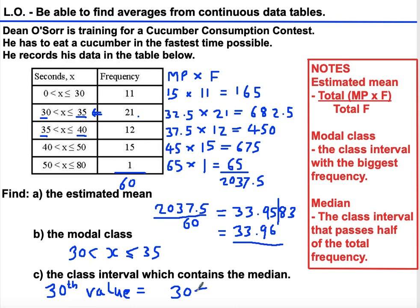We can write that down. It's always the class interval that goes past the halfway point. If you had 100 values, it would be the class interval that took you past the 50th value, and so on.